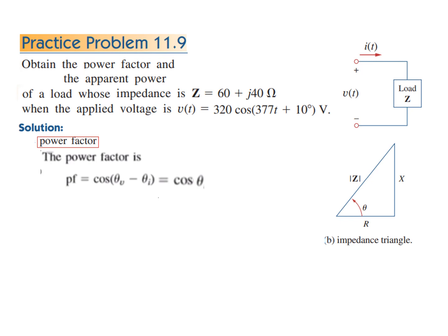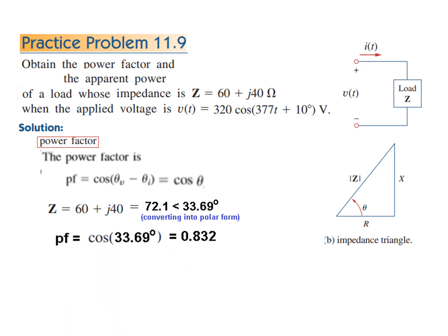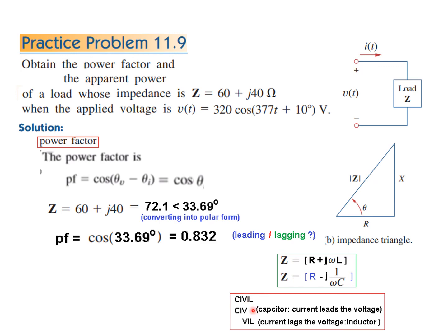Converting Z to polar form gives the magnitude and angle. Theta = 33.69°, so power factor = cosine(33.69°) = 0.832. Since Z has a positive imaginary sign, it is an inductive circuit, and in an inductor the current lags the voltage — so the power factor is 0.832 lagging.